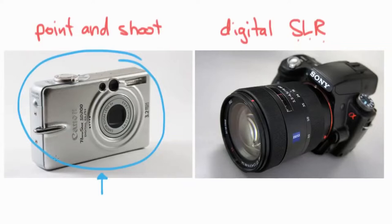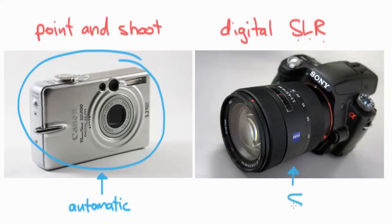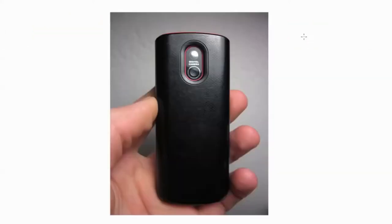The plus of a point-and-shoot is that it's more automatic and set up for you. Digital SLRs now often have automatic settings too, and sometimes better automatic settings than point-and-shoots, but they're also more expensive. In terms of usability, the digital SLR gives you a lot more options and control over things you can't control on the point-and-shoot.